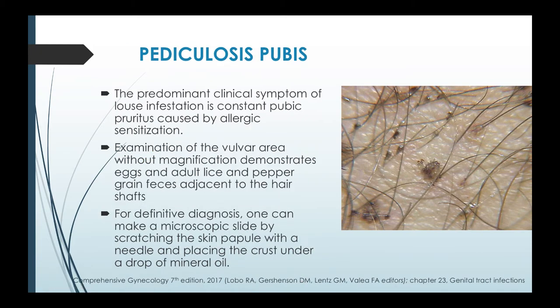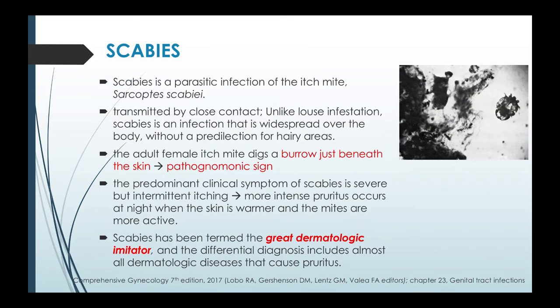The predominant clinical symptom of louse infestation is constant pubic pruritus caused by allergic sensitization. Examination of the vulvar area without magnification demonstrates eggs, adult lice, and pepper-grain feces adjacent to the hair shafts. For definitive diagnosis, one can make a microscopic slide by scratching the skin papule with a needle and placing the crust under a drop of mineral oil.